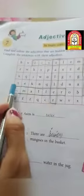Now we are going to solve the blanks. Asim is little but Asim is taller. Taller is an adjective. So we have to write taller here. T A double L E R.